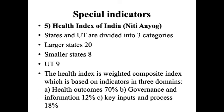The Health Index of India is produced by NITI Aayog, which has divided states and union territories into three categories: larger states (20), smaller states (8), and union territories (9). The health index is a weighted composite index including three basic components: health outcomes (70% contribution), governance and information (12%), and key inputs and processes (18%). Based on these three components, NITI Aayog ranks the states and union territories and publishes the health index.